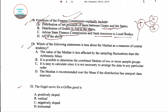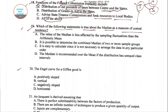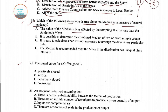Question 19: which of the following statements is true about the median as a measure of central tendency? Options include: the value of the median is less affected by sampling fluctuations than the arithmetic mean; it is possible to determine the combined median of two or more sample groups; it is easy to calculate and does not require data to be arranged in a particular order; and the median is recommended over the mean if the distribution has unequal class intervals.